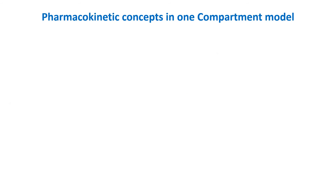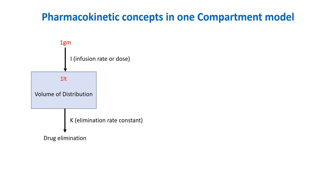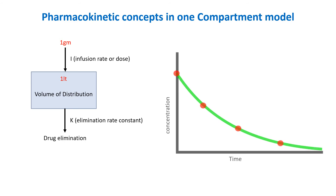Let's consider an example where a drug dose of 1 gram is injected into a 1 liter compartment. In the one compartment model, the drug is assumed to distribute evenly and undergo first-order elimination. Graphically, we would get a concentration-time graph like this one.